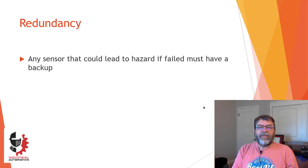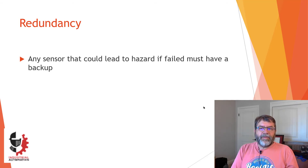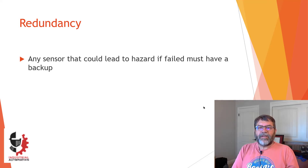Next is redundancy, and this one's pretty short and simple. Essentially, any time you have a sensor where a failure could lead to an unsafe condition, you have to put in a backup sensor — that's pretty well mandatory. If one sensor failure can lead to an unsafe condition, you have to have a backup sensor. Pretty straightforward.